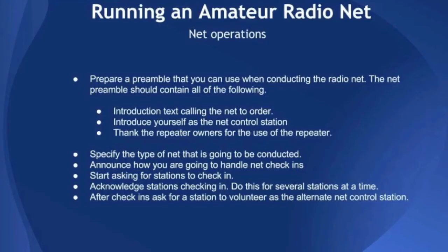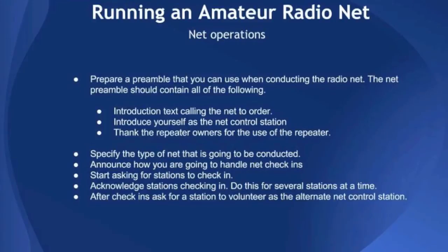The preamble should include introduction text for calling the net to order, introducing yourself as the net control station with your name and location, and thanking the repeater owners. The text that I use each week is as follows: 'Calling all amateur radio operators. This frequency will now secure for the Christiana Amateur Radio Emergency Service CARES Training and Information Net. This net meets weekly at 8 p.m. on repeater frequency 146.730, located in North Wilmington with a PL tone of 131.8. Thank you to the Delaware Repeater Association for allowing Christiana ARES the use of this repeater. All licensed radio operators are invited to check in. Your net control this evening is John and my call sign is November 3 Lima Uniform Delta, and I'm located in North Wilmington.'